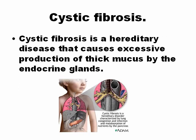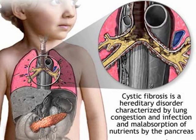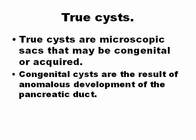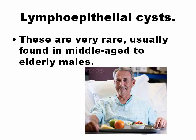Cystic fibrosis is a hereditary disease that causes thick mucus by the endocrine glands. It is very common and is characterized by a predisposition to lung infection. Solitary pancreatic cysts include true cysts and lymphoepithelial cysts. True cysts are microscopic sacs that may be congenital or acquired. Lymphoepithelial cysts are very rare and are found in middle-aged to elderly males.